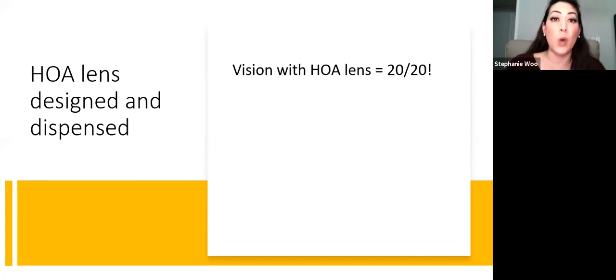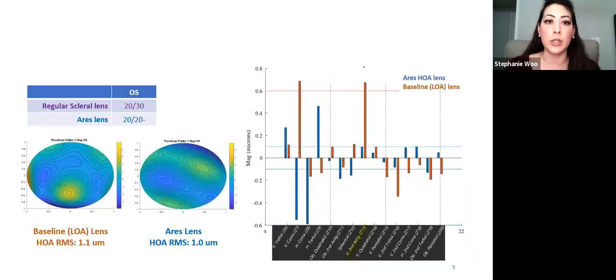Going from 20/100 down to 20/30 is already pretty awesome, and a lot of keratoconus patients are really happy. But just to press things even further, just to see if we could get any better vision with this HOA lens, he was able to get to 20/20 vision, which is really incredible.